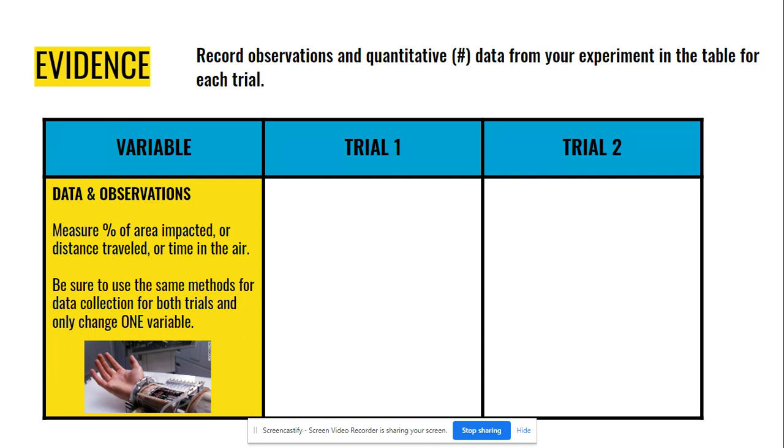And make sure that there's only one variable that's different between your trials. So trial one might be big parachute and trial two might be no parachute. You just want to make sure there's only one difference between each of those two trials. And remember in high school, this is how you're going to need to set up and analyze experiments a lot. So this is really good practice.